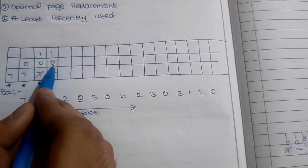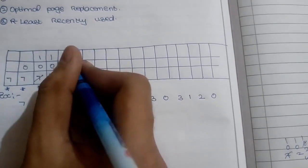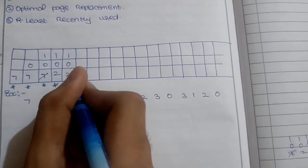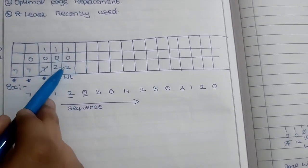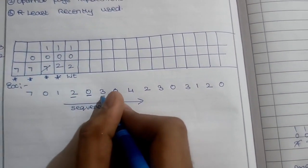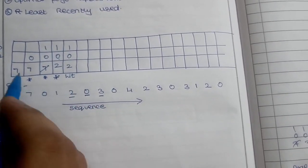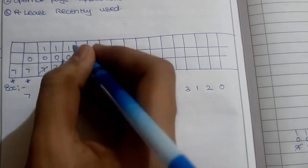Next is 1, 0, 2. Then 0 is already in the frame, so this is a hit, not a fault. Next reference is 3, which makes it 0, 0, 1, 0, 3, 0.